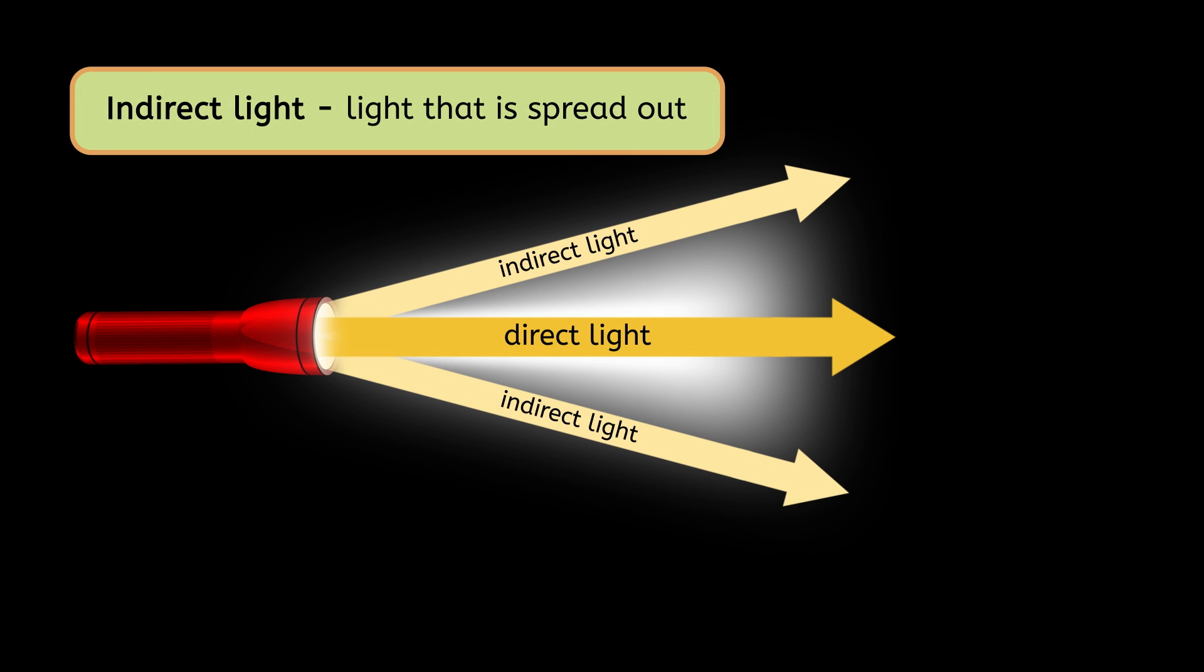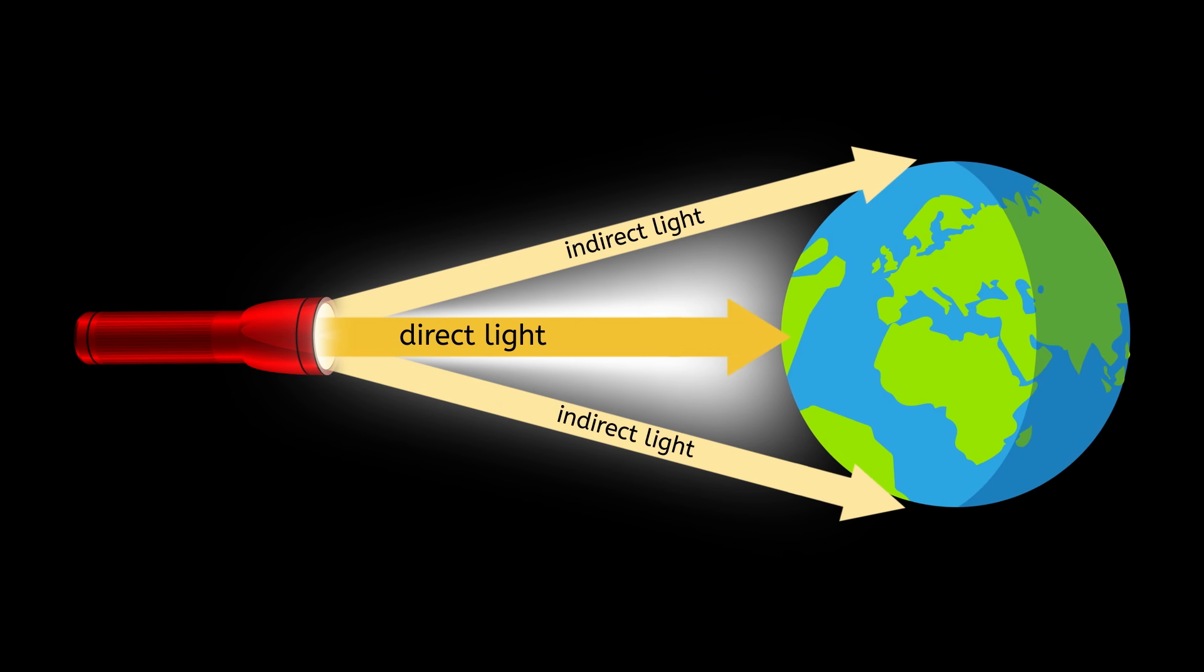Let's see what this light would look like shining on our Earth. Here is a model of the Earth without its tilted axis. Notice how the light is pretty evenly spread across the Earth. But our Earth isn't straight like this. It is tilted.